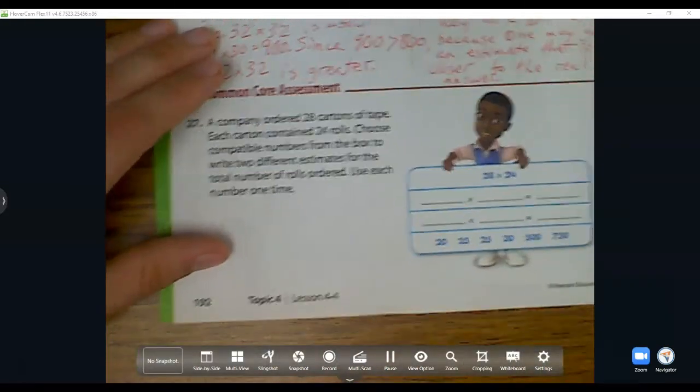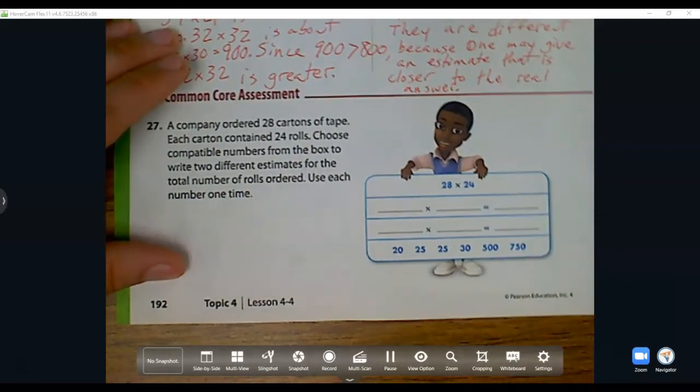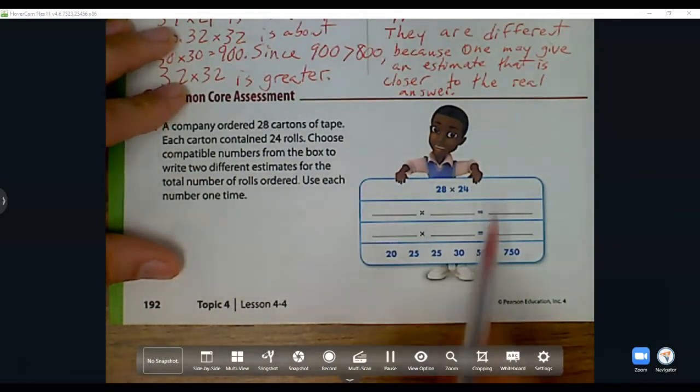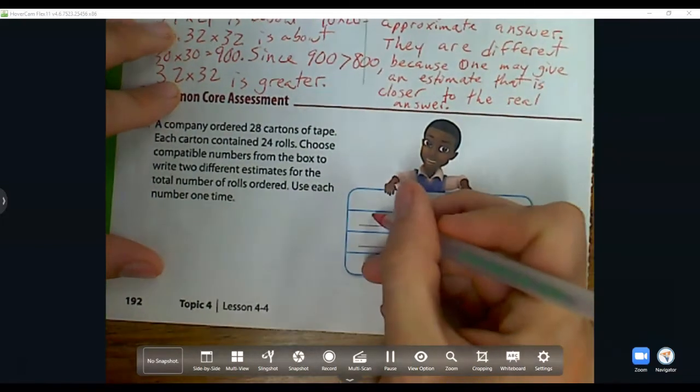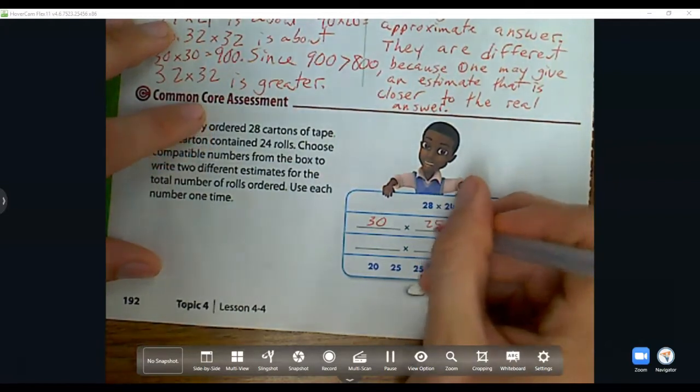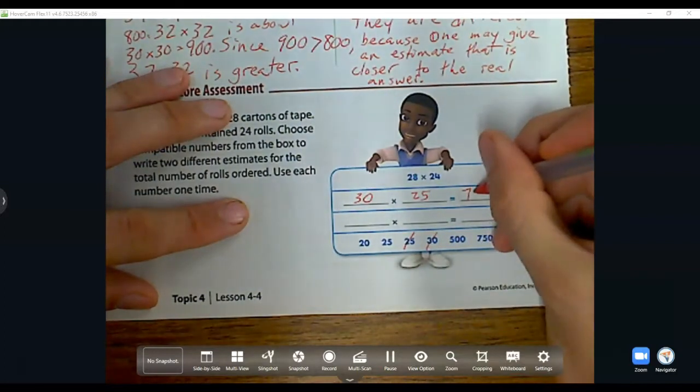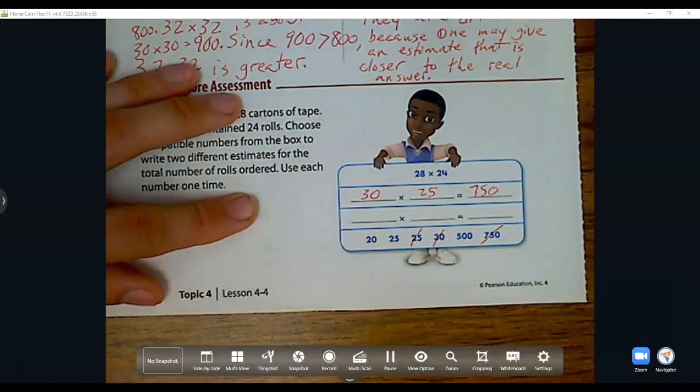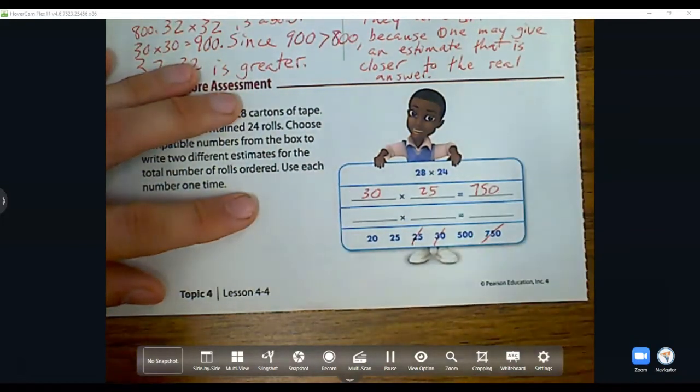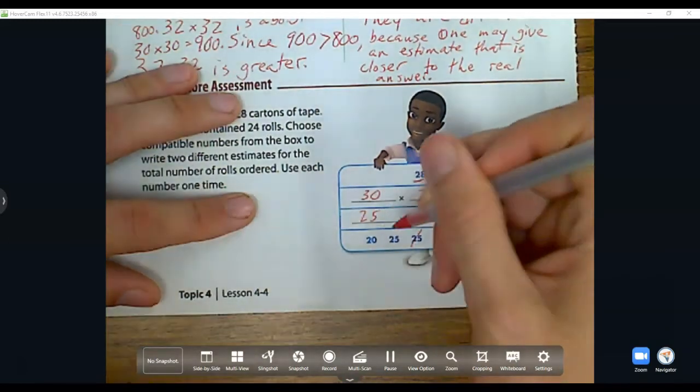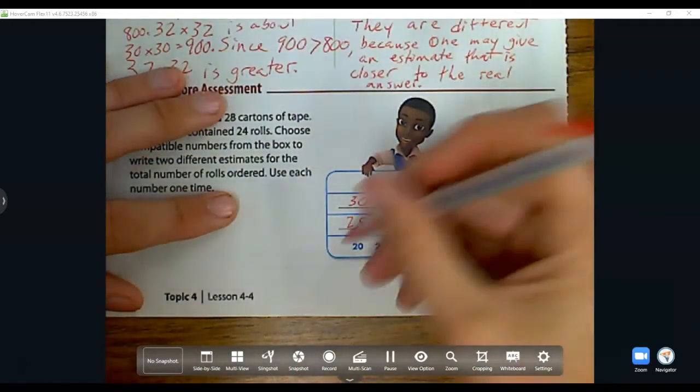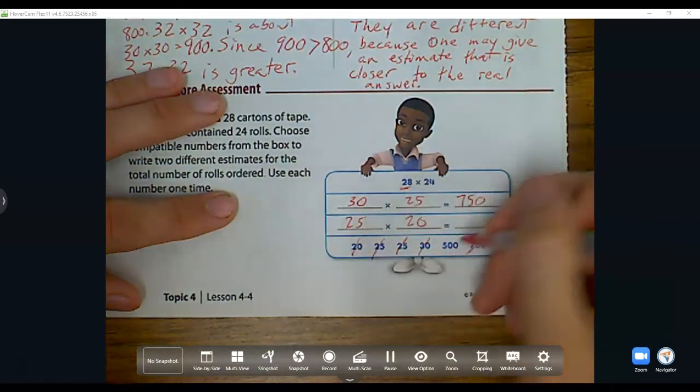Now for 27: A company ordered 28 cartons of tape. Each carton contains 24 rolls. Choose compatible numbers from the box to write two different estimates for the total number of rolls in order. Use each number once. Let's see, 28 is close to 30, 24 is close to 25. 30 times 25, that's 3 times 25 which is 75, and I add that 0. That answer's there. Then we have 28. Since it's not here, we can't use that 3 again. Maybe they pick 28 as being close to 25 because that is a compatible number. And 24, well we don't have a 25 to pick again, so maybe they went down to 20. 25 times 20 is 500.